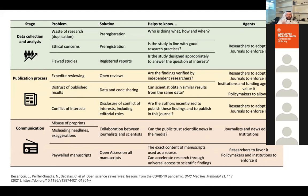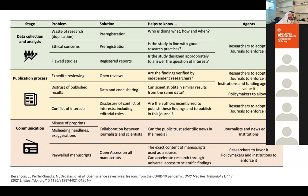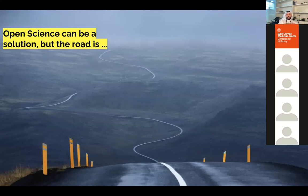If you share data and code, others can see the source of information and how you reached your conclusions. Publishing in open access means everybody has access to information. I invite you to read that paper in further detail — it's really good. I've talked about open science, where it is, how it can help the health field. Now I want to focus on the challenges for open science — yes, open science can be a solution, but the road is long and tricky.